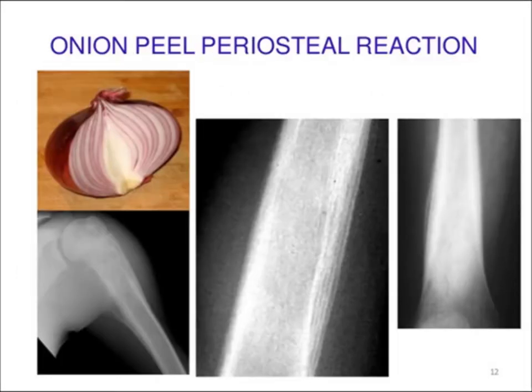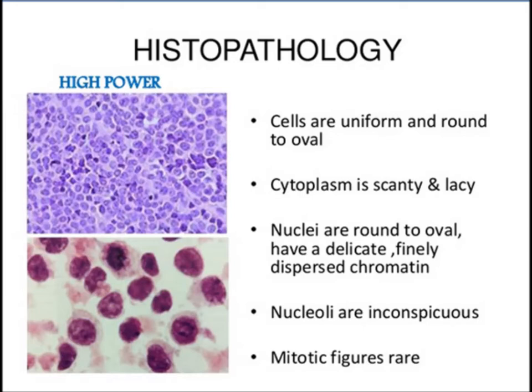Here you can appreciate the layering of the periosteal reaction, as in an onion peel. Morphologically, on microscopic examination, cells are uniform and round, cytoplasm is scanty, and nuclei are round to oval. Nucleoli are not prominent.